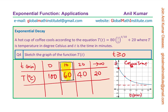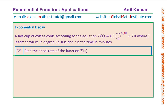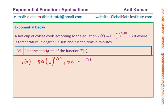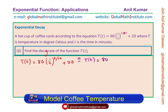Now let's find the decay rate. Question 5 asks us to find the decay rate of the function T of t, given as 80 times one-half to the power of t over 10, plus 20. To find the decay rate, we rewrite the equation in the form: temperature equals 80 times (1 minus R) to the power of t, plus 20, where R is the decay rate.